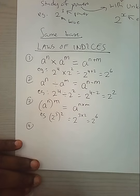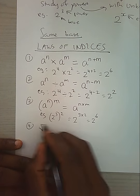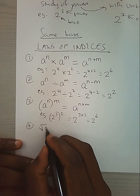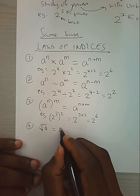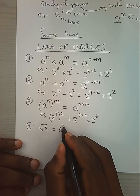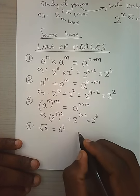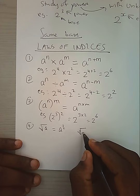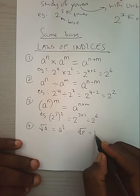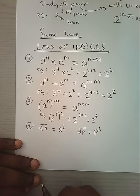We also have a note stating that if you have a square root of a number, it is exactly the same as power half. Similarly, a cube root of a number means it will be p power 1 over 3.